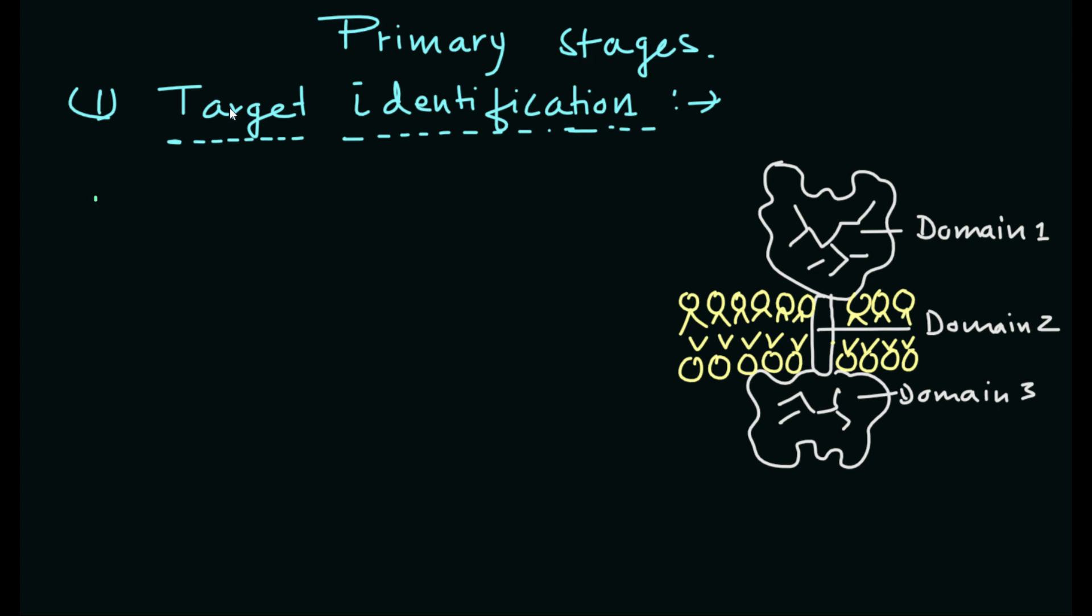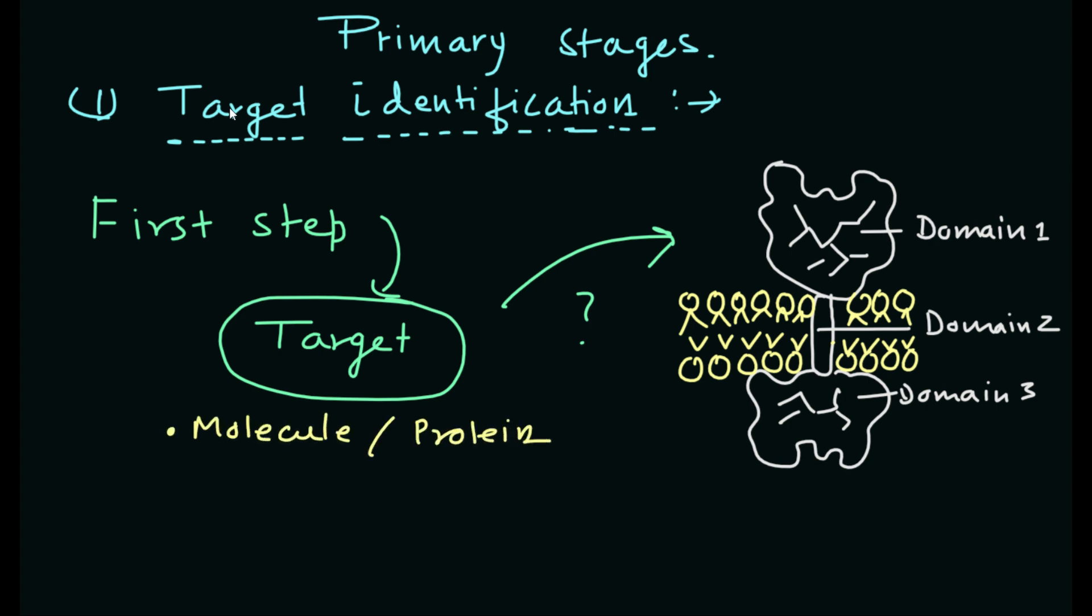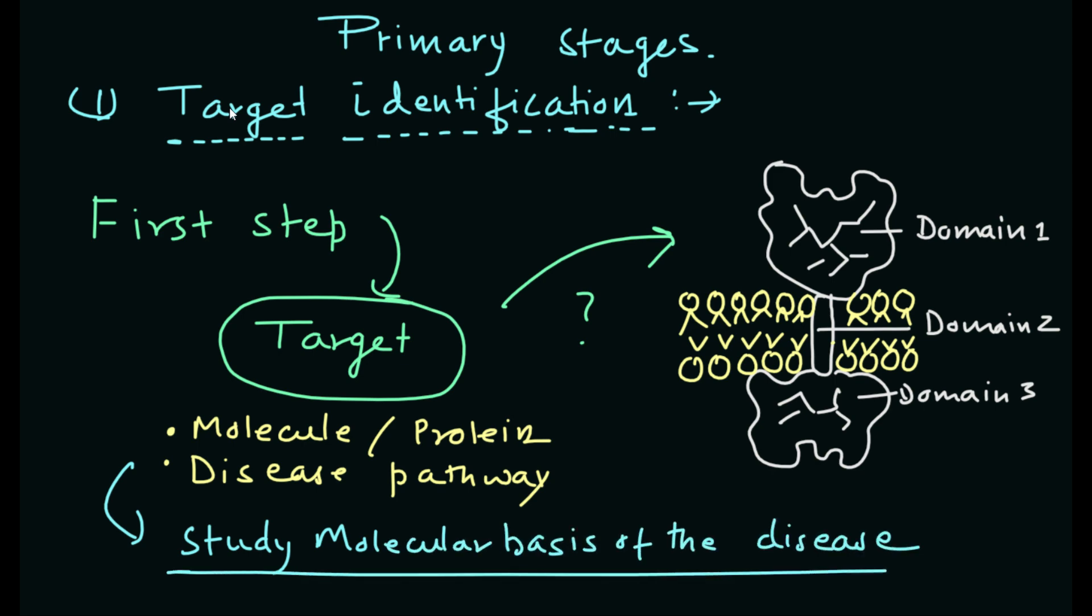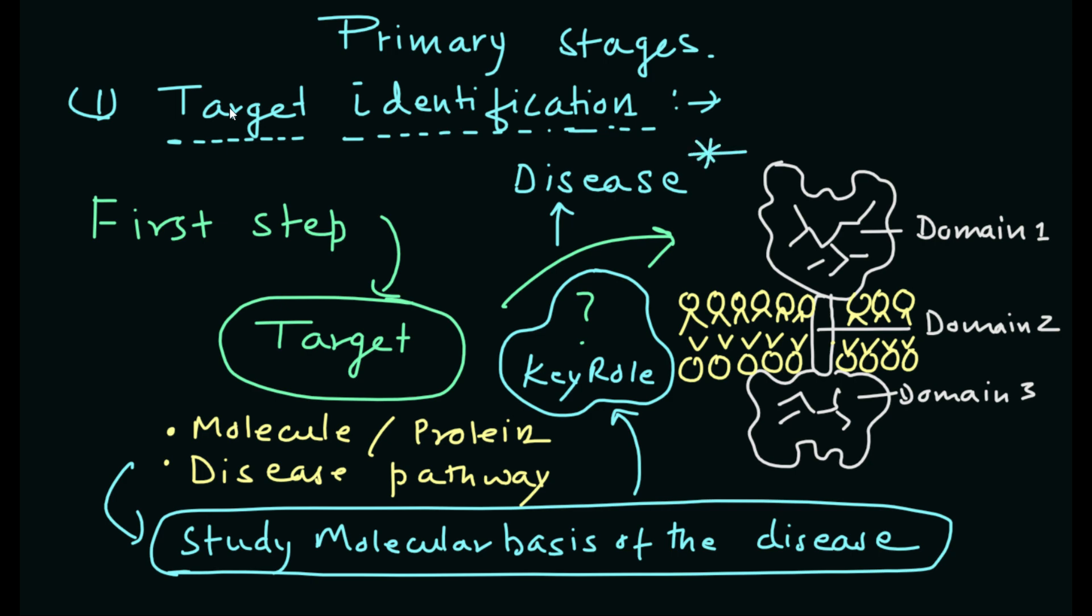Here are the primary stages of the drug discovery process. First is target identification. The first step is to identify a molecule or protein involved in a disease pathway that serves as the target. The identification process can be achieved through studying the molecular basis of the disease. This way, a key protein is identified that plays a key role in the progress of the disease.